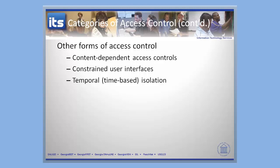Constrained user interfaces are another commonly used control, used within the University System of Georgia. You get different user interfaces based on what your role is or where you're coming from. If you're from the general public accessing the public website, you see certain things; if you're from one of their institutions, you see other things. This links into content-dependent access — what you see within a particular interface depends on your role. This is very commonly used on role-based World Wide Web sites.